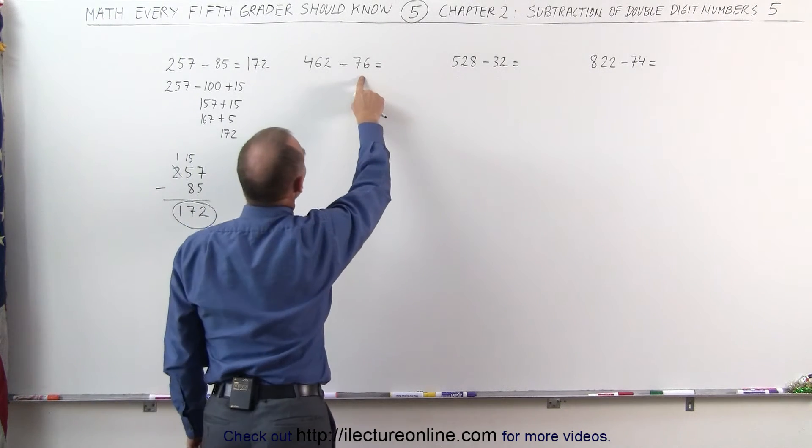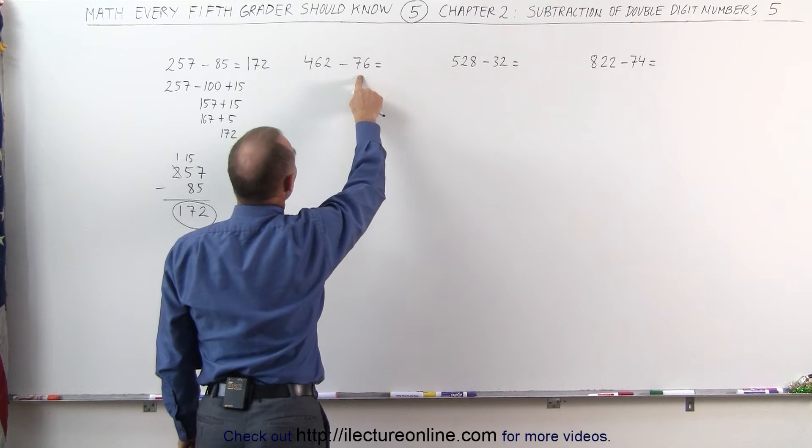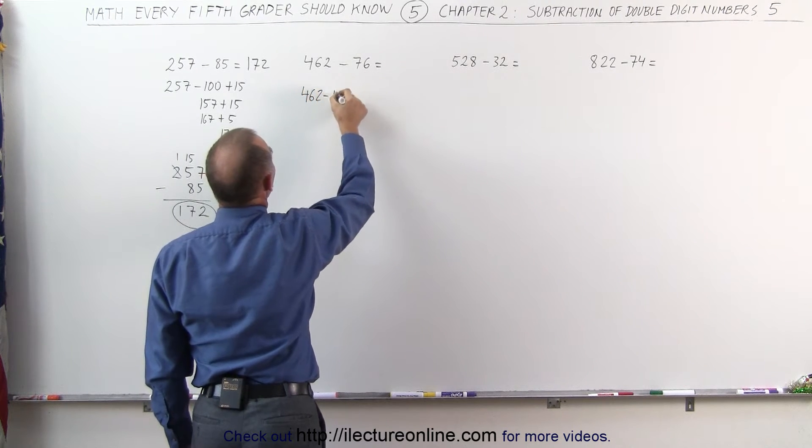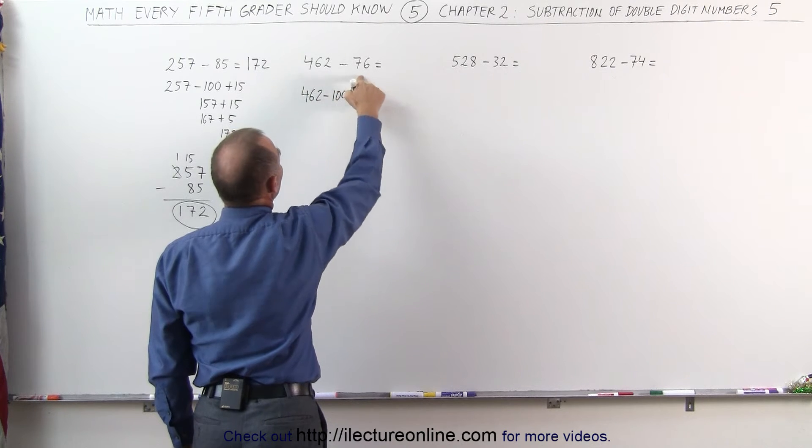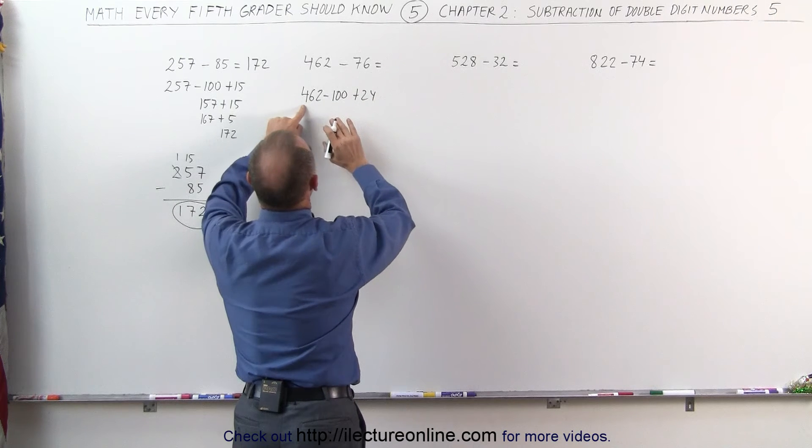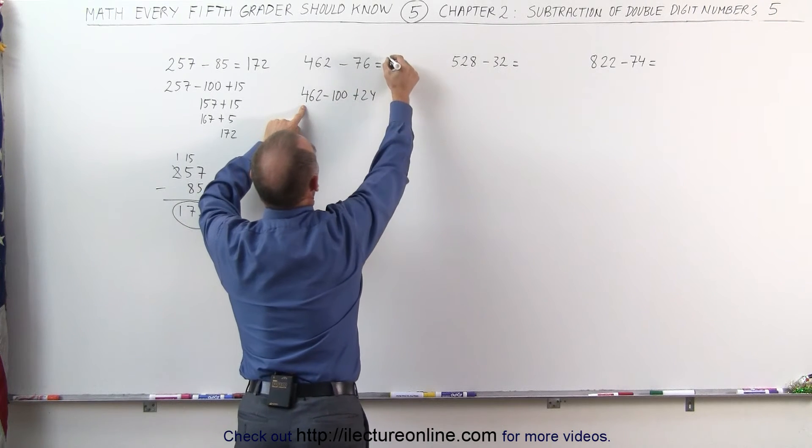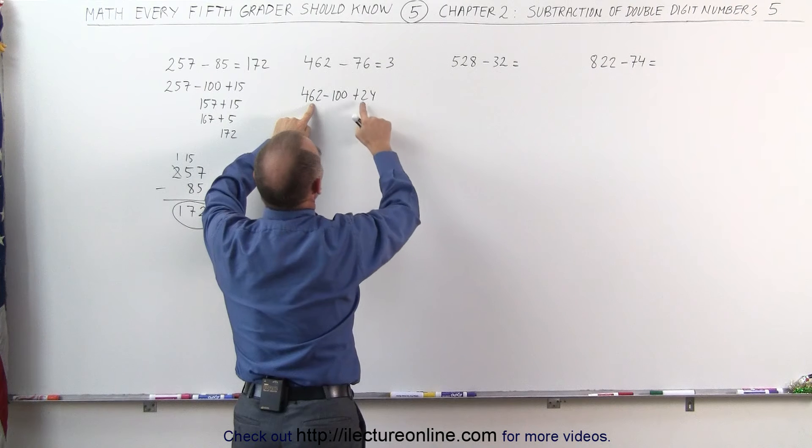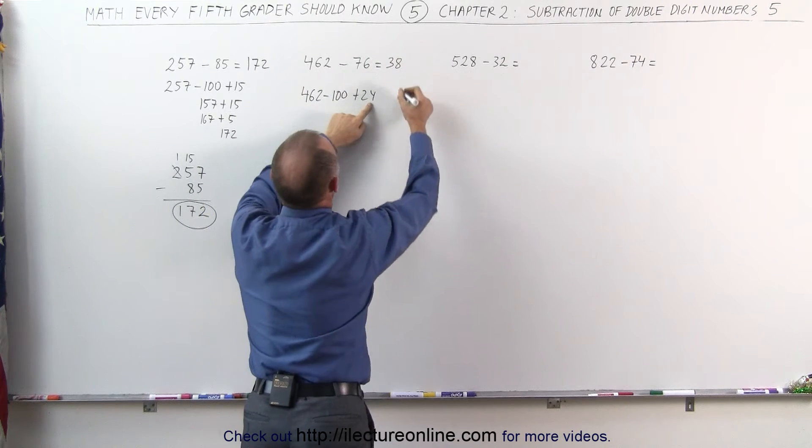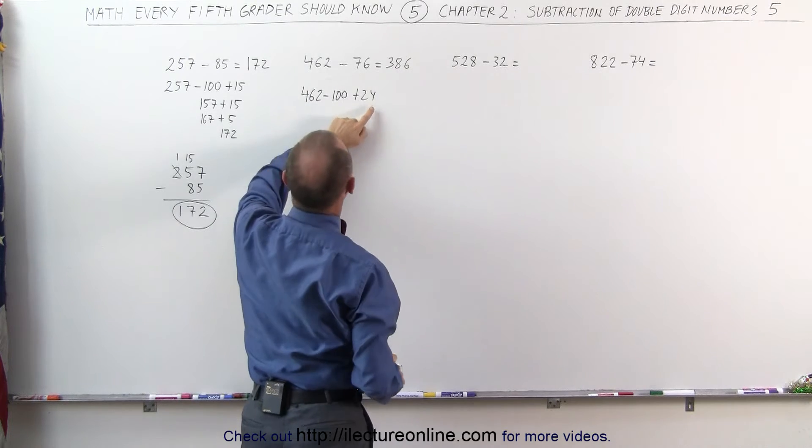Same over here, what I can say, the way I can think about it is as follows. I can say that this is 462 minus 100, but I subtracted 24 more than I should, I add the 24 back. This becomes 462 minus 100, that makes it 362, but I have to add another 24 to it. So 6 plus 2 is 8, and 2 plus 4 is 6, the answer is 386.